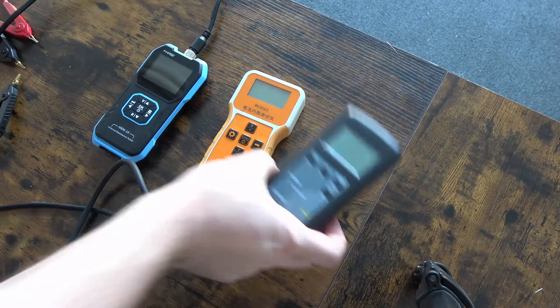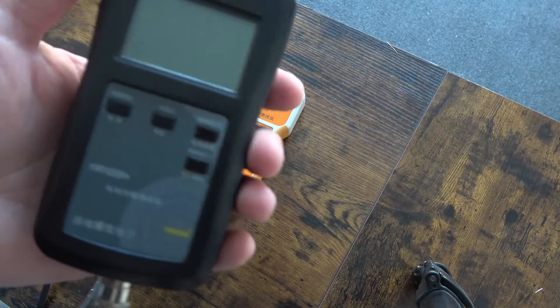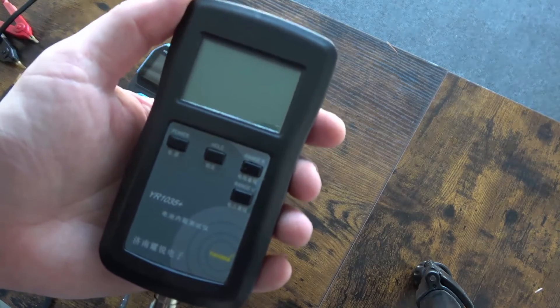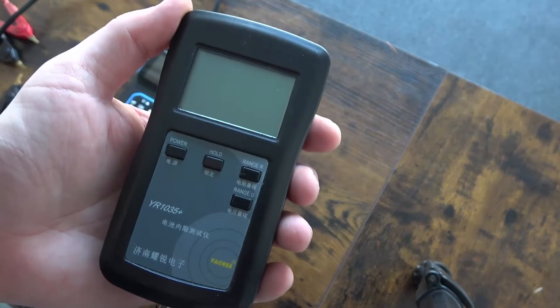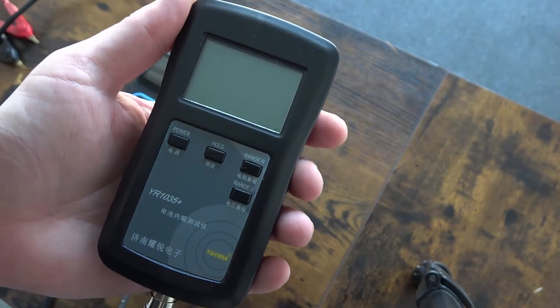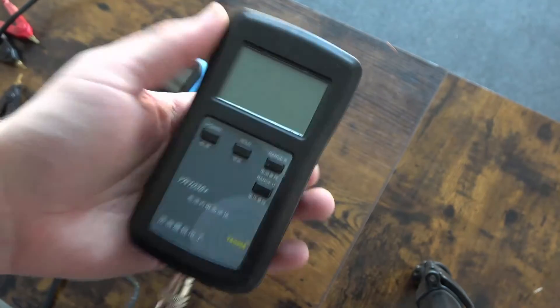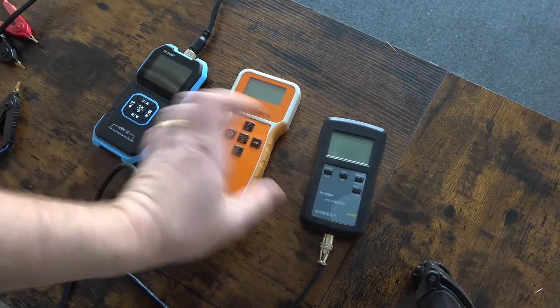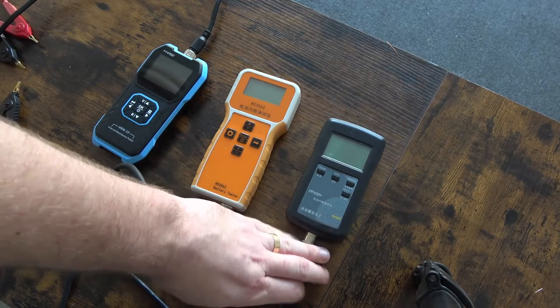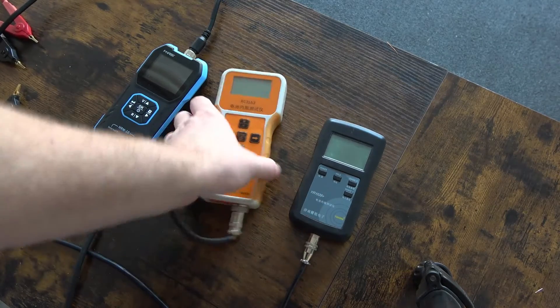The three we're working with today: the YR1035+. This one is pretty common on AliExpress. You can find it for generally $30 to $40. This has been one of the staples that I've used since the very beginning.